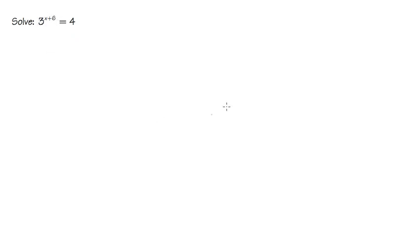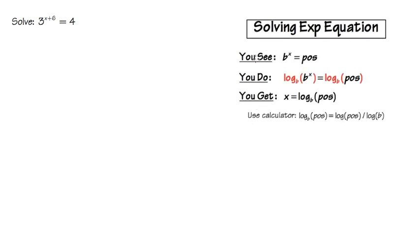Let's take a quick review on how we can solve an exponential equation. When we see that the x is in the exponent in the form of b to the x is equal to a positive number, which we do right here—3 to the x plus 6 is equal to positive 4—then what we do is